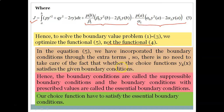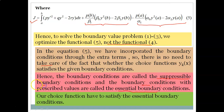There is no need to take care of whether the choice function y(x) satisfies the given boundary conditions involving derivatives. Hence those boundary conditions are called suppressible — meaning we don't need to worry about them. The boundary conditions with prescribed values are called essential boundary conditions.